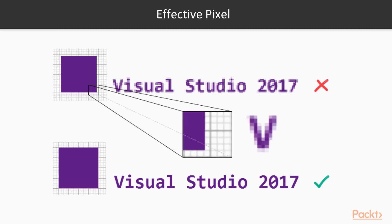Then, effective pixels. As you are targeting your app to scale properly in small, medium, and large resolution systems, it is necessary to take care of your design based on effective pixels instead of actual pixels. In this example, you could see that the text Visual Studio 2017 is blurred as it was not effectively placed in the 4x4 grid. But in the second example, the clarity is better as it was properly snapped to the grid block.